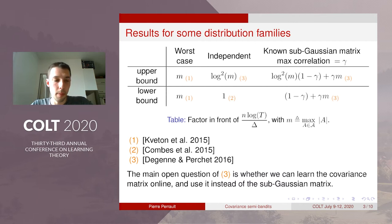And the main open question that is left by Degenne and Perchet was whether the assumption that the sub-Gaussian matrix is known could be removed or at least replaced by some tighter quantity that is the covariance matrix itself, that is tighter than the sub-Gaussian matrix.